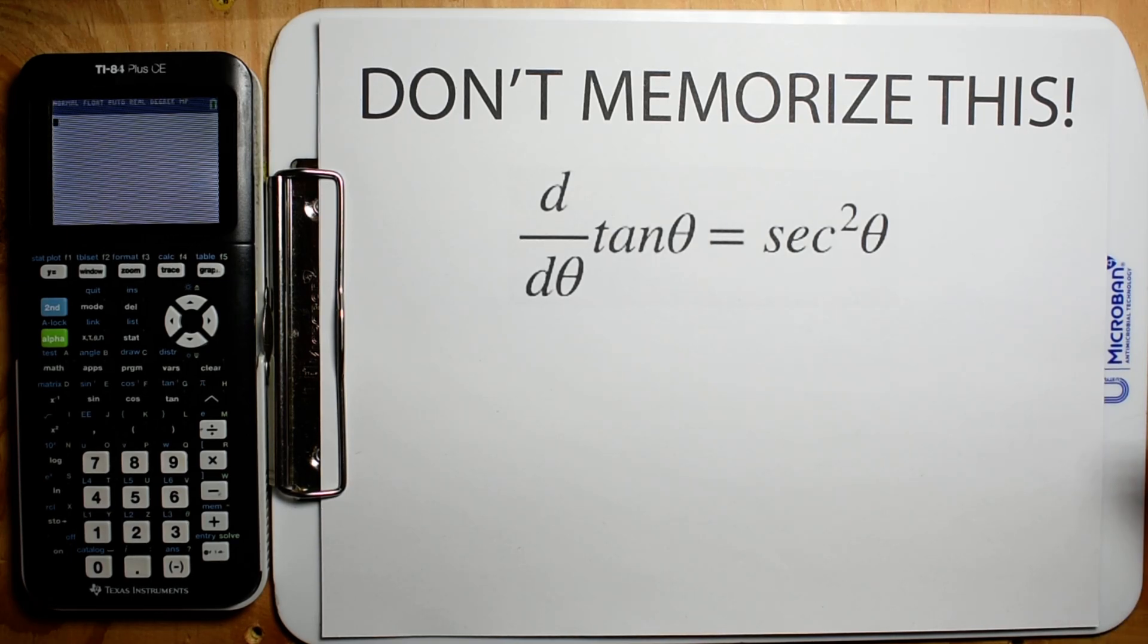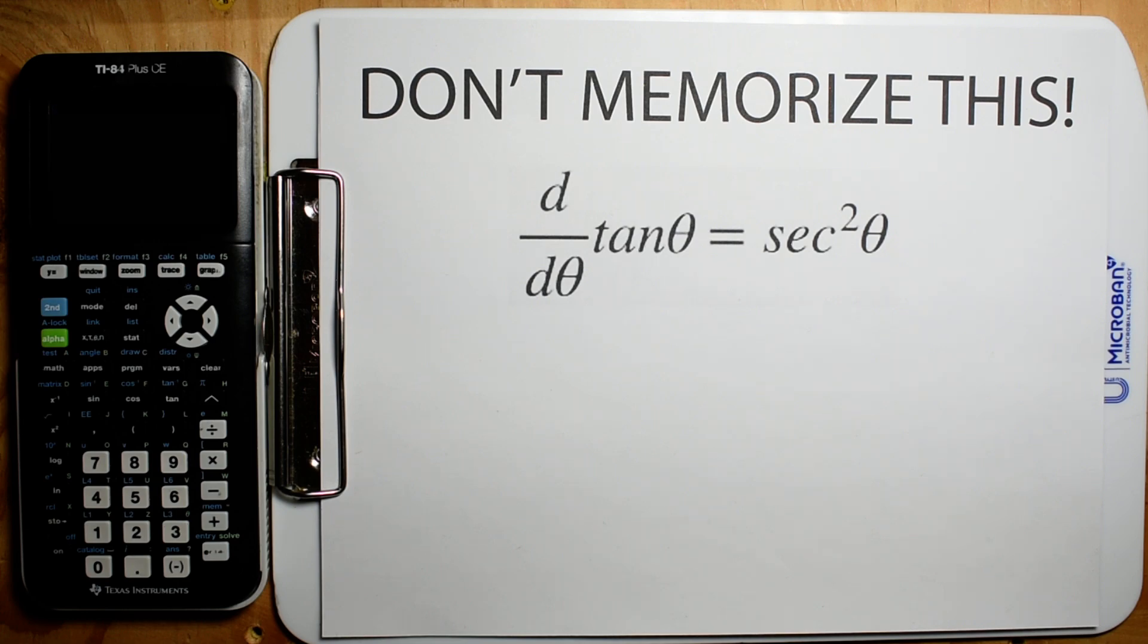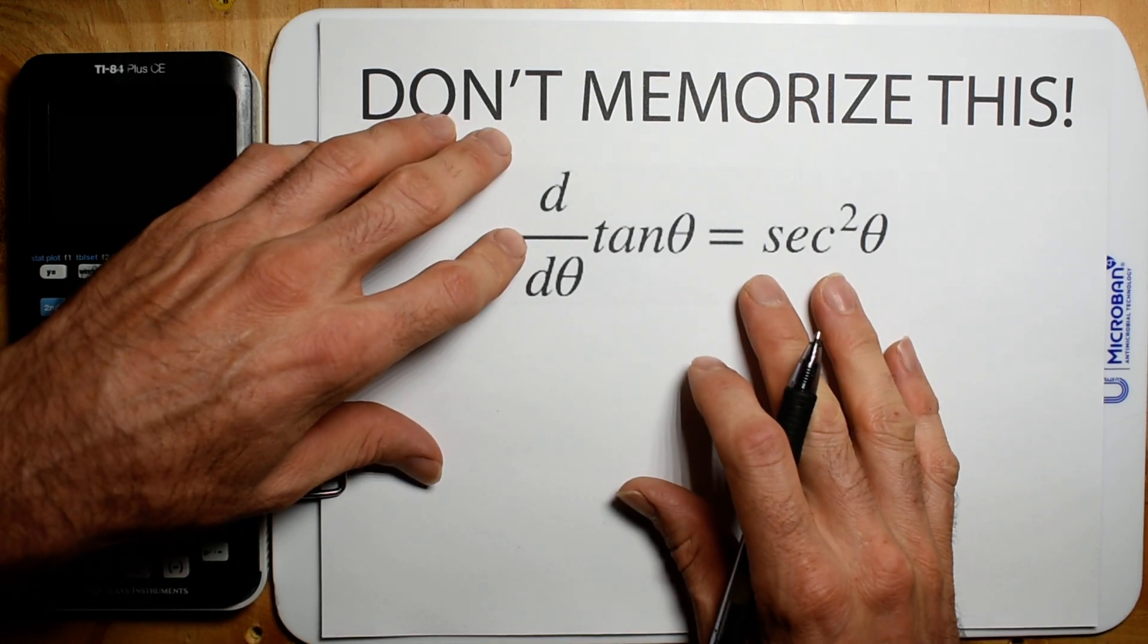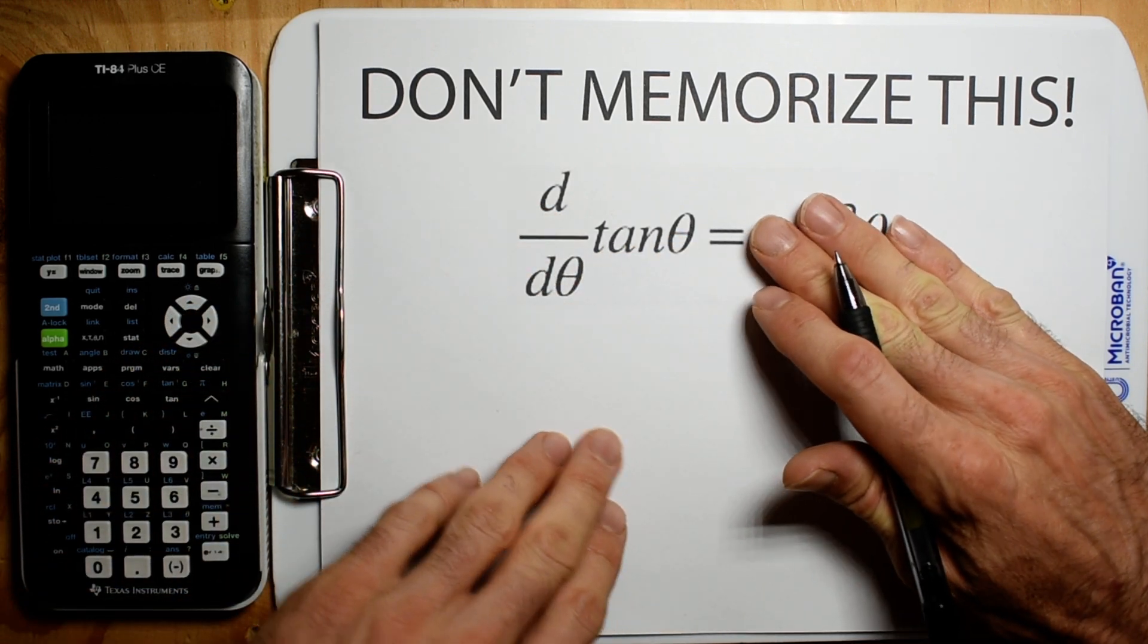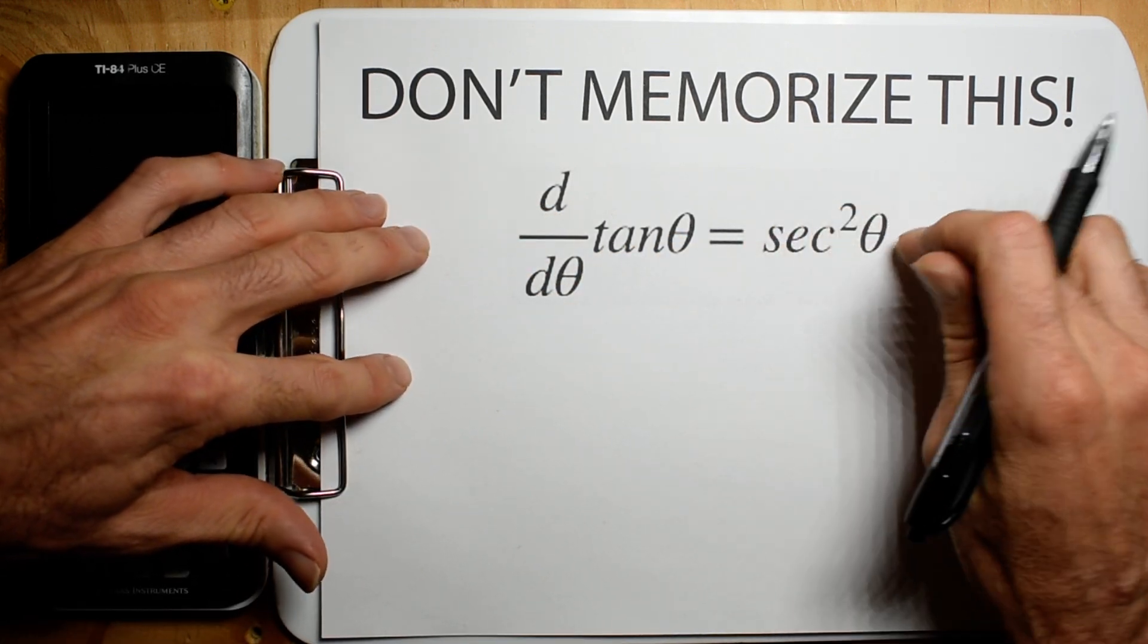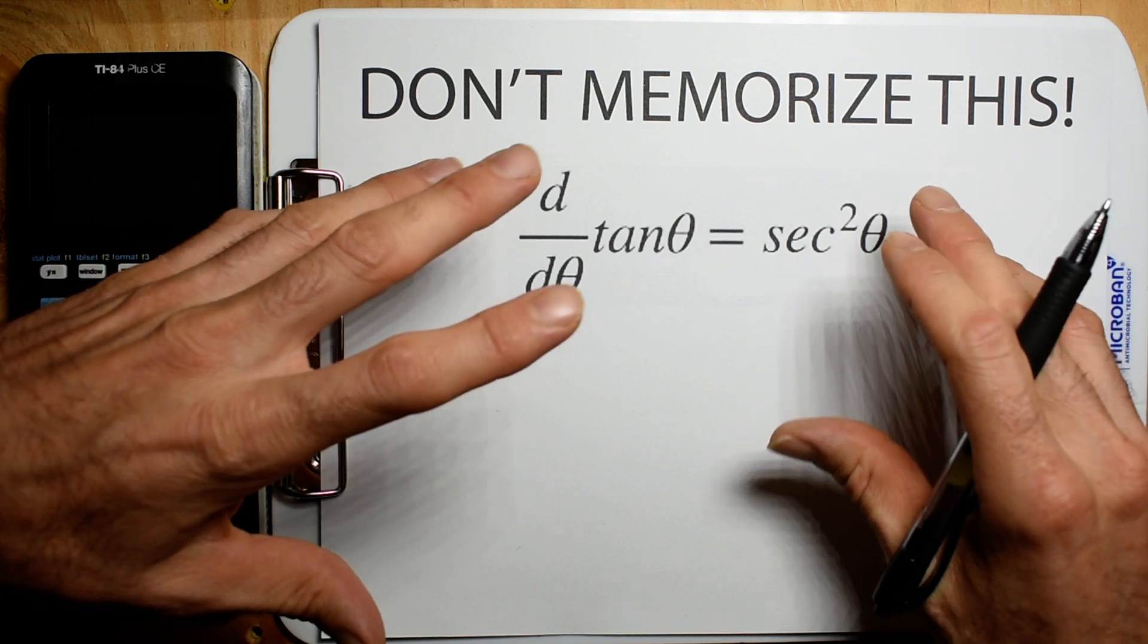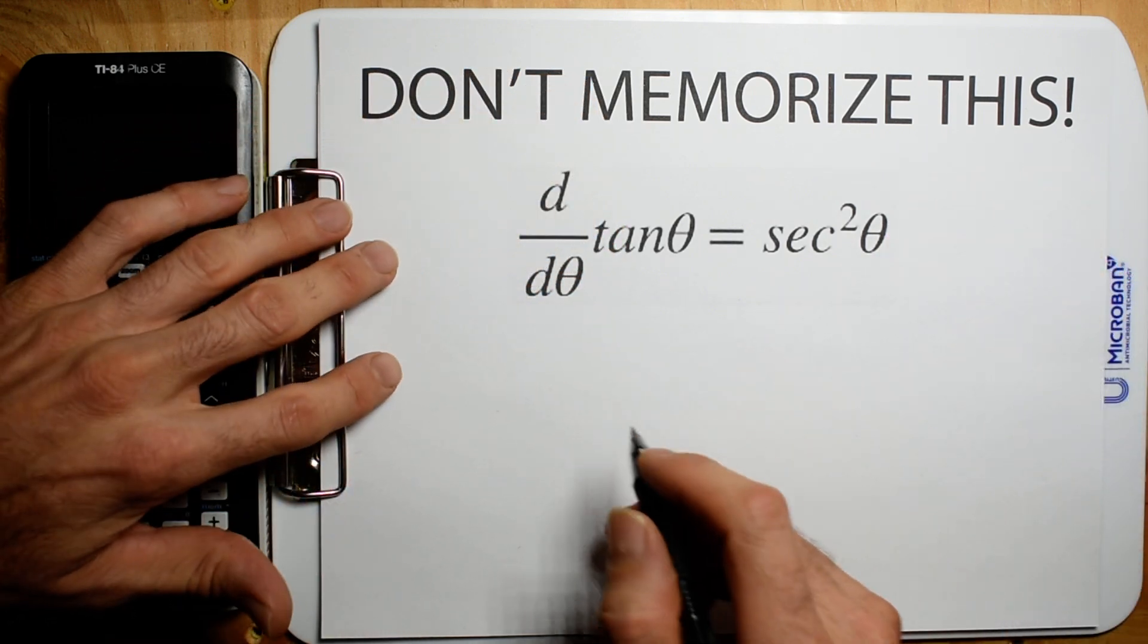Alright, so this is going to be a pretty quick video, and you're probably not going to learn much about trigonometry, but you are going to learn about the quotient rule and how you can do this one fairly easy, and just don't memorize this. We'll even get a different form that may be more representative, so here we go.